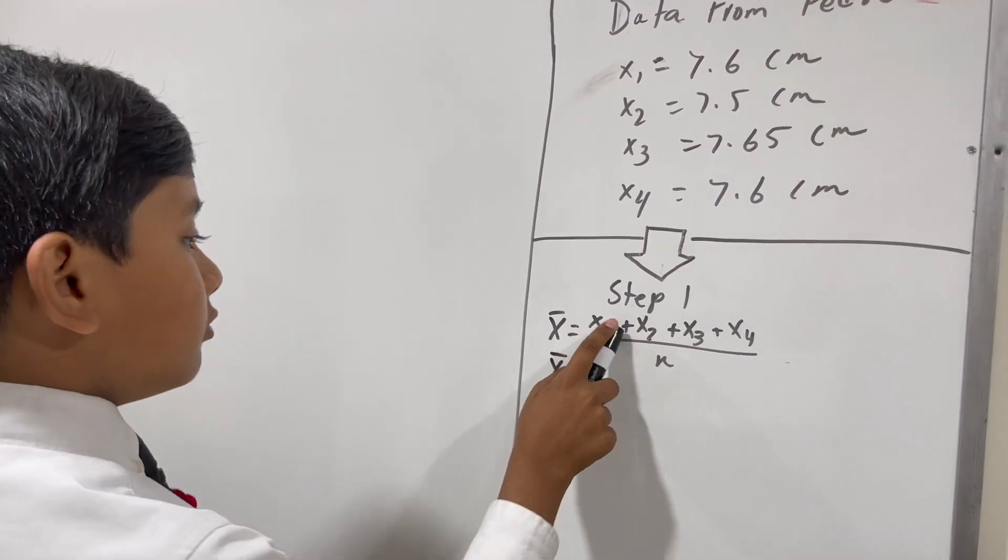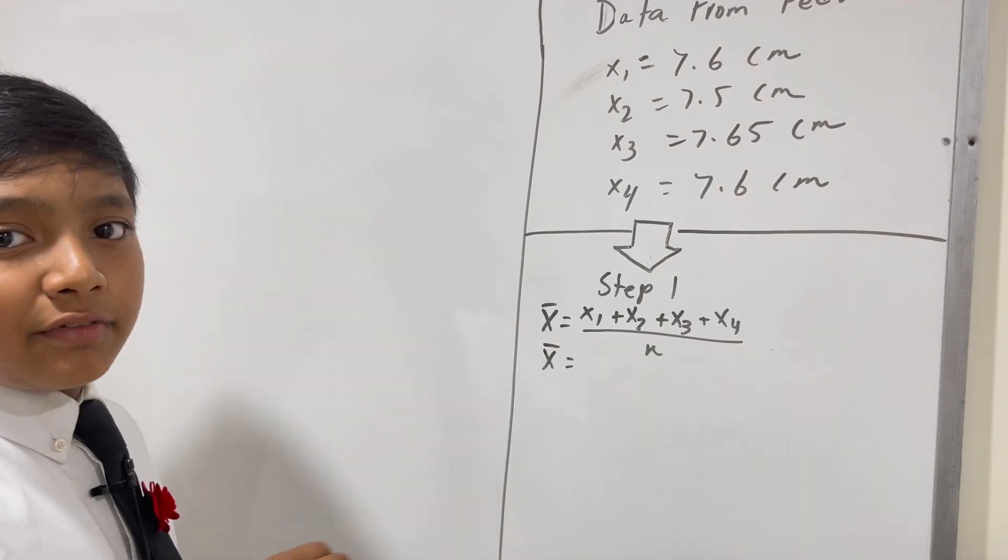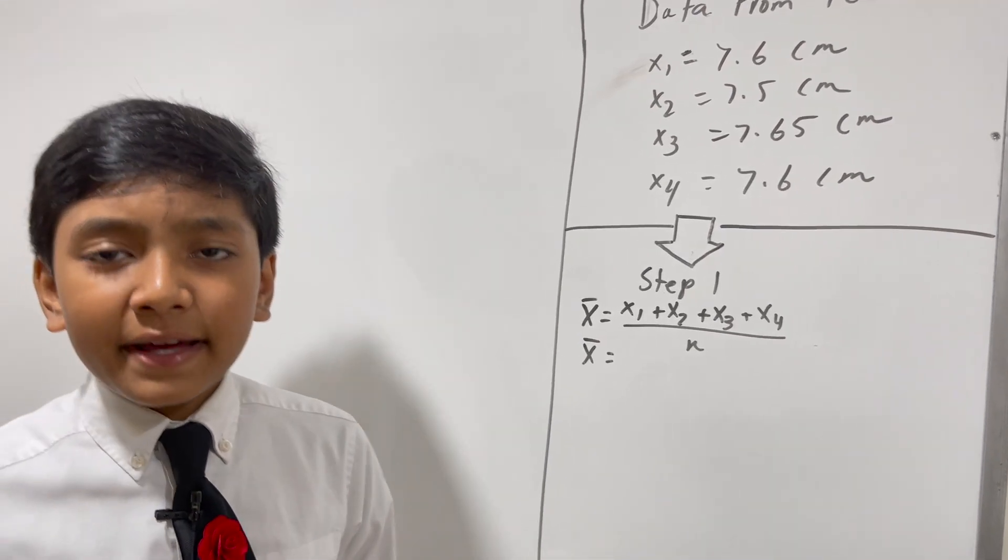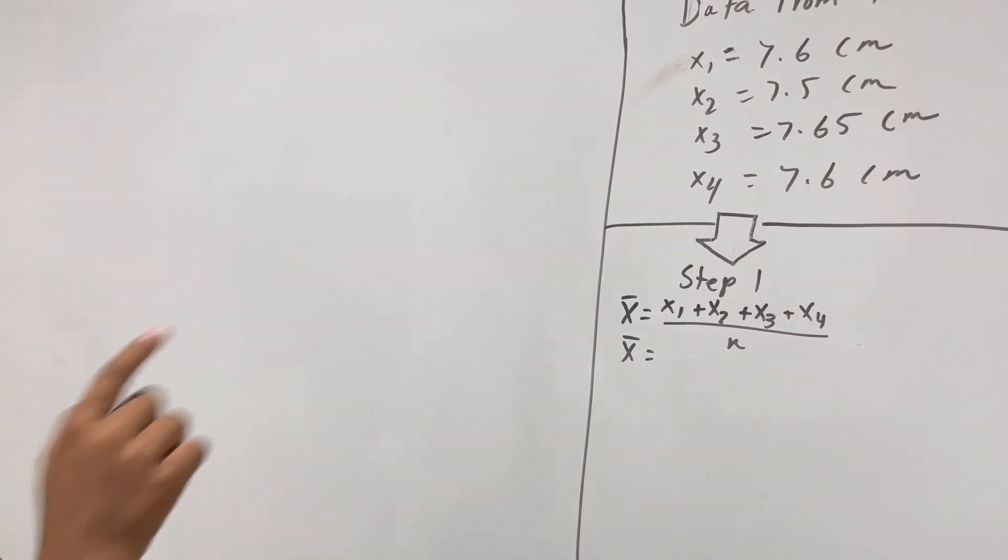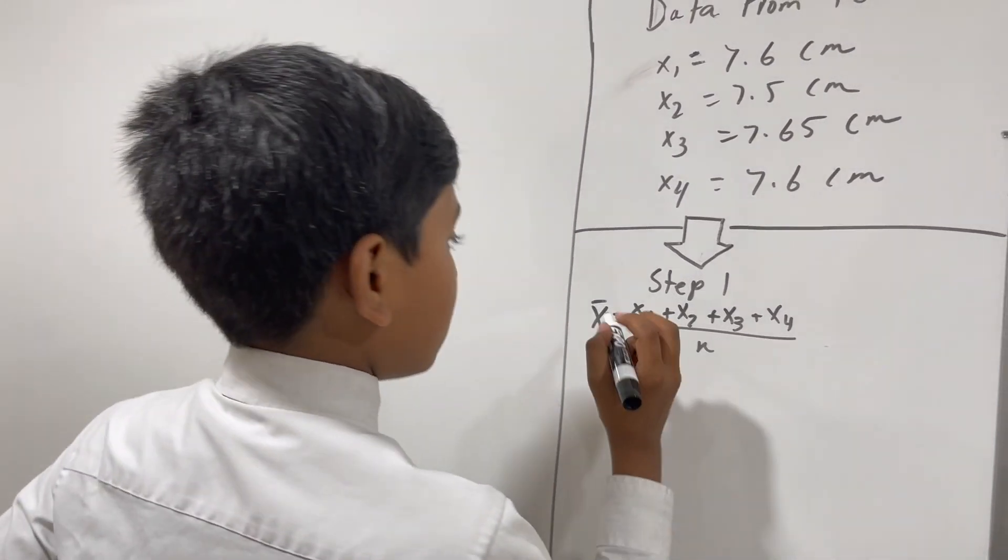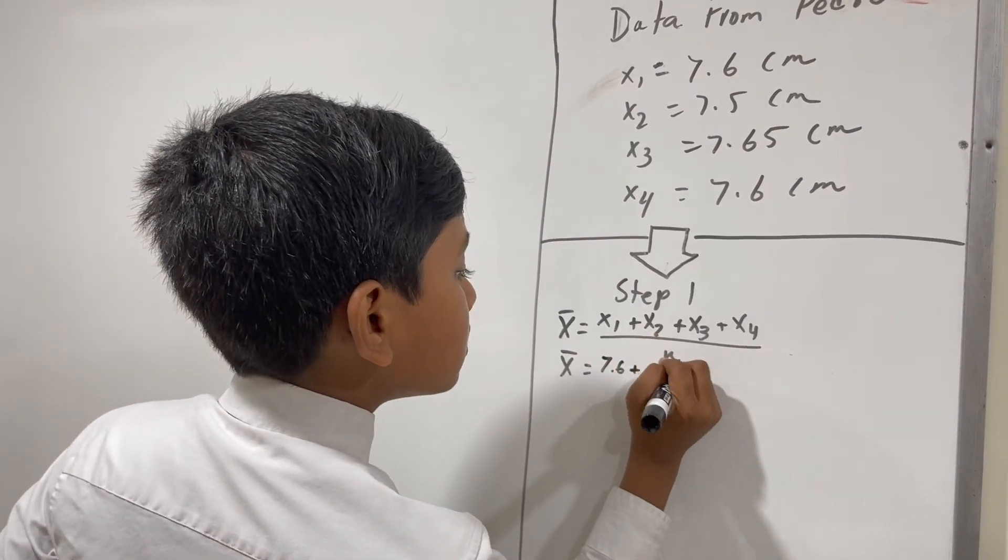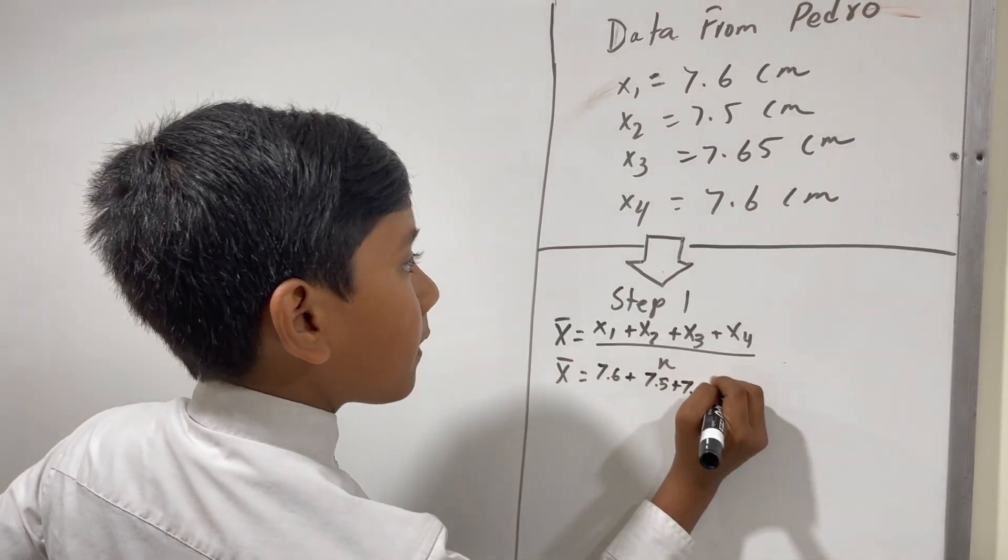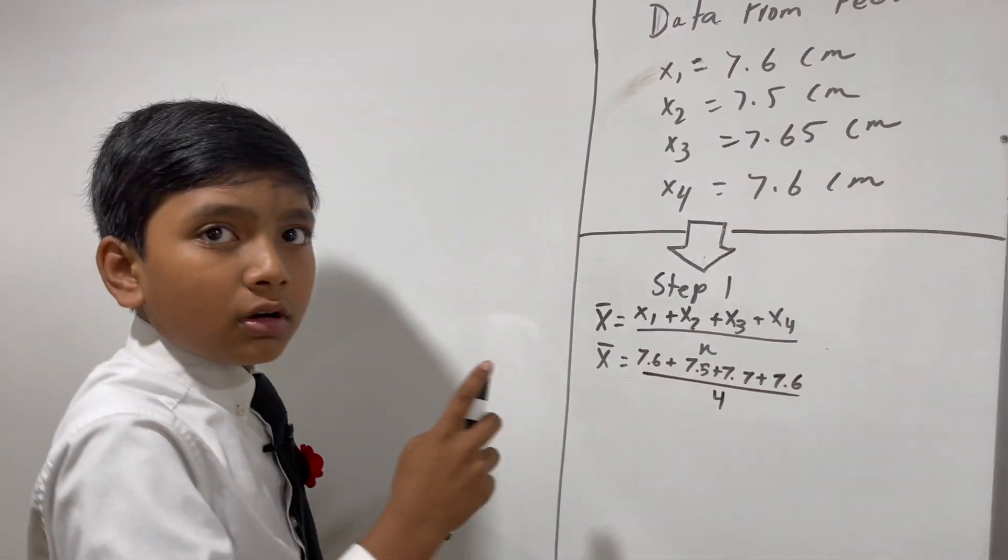So what is x1? 7.6 cm. x2 is 7.5 cm. x3 is 7.65 cm, but because of sig figs we're gonna have to round it to 7.7. x4 is 7.6 cm. So let's put that in, and this is all divided by 4.